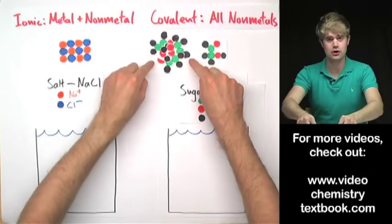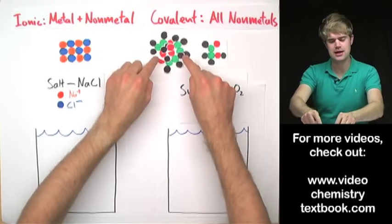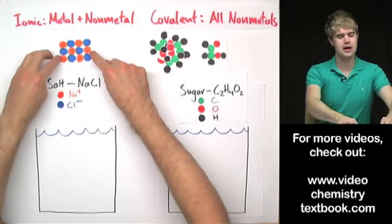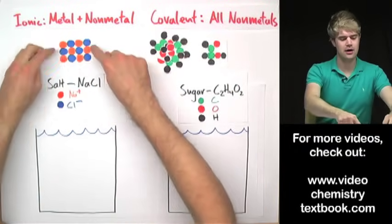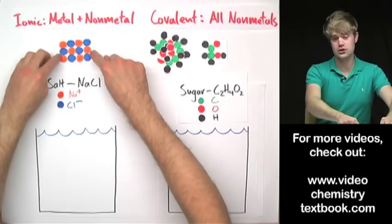Notice that a grain of sugar is a lot more messy. It's not nearly as well organized as an ionic compound, this grain of salt over here.